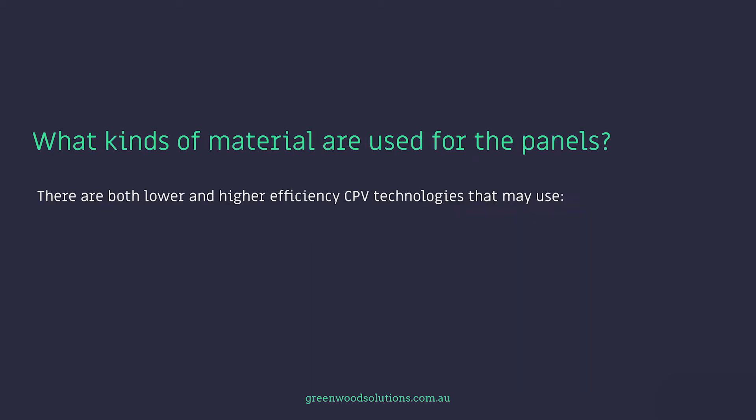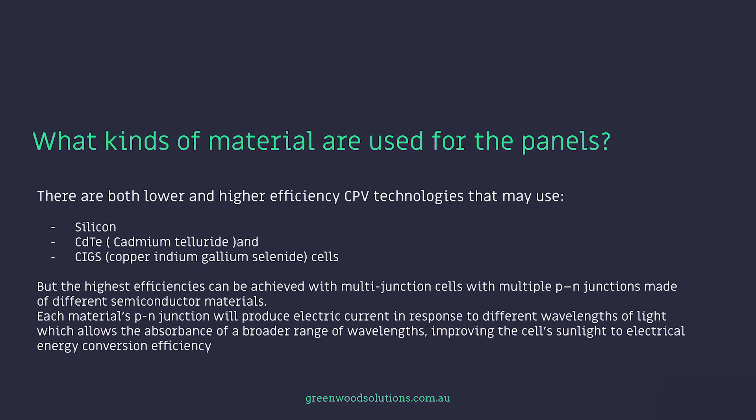There are both lower and higher efficiency CPV technologies that may use silicon, cadmium telluride, and copper indium gallium selenide cells. But the highest efficiencies can be achieved with multi-junction cells with multiple PN junctions made of different semiconducting materials. Each material's PN junction will provide electric current in response to different wavelengths of light, which allows the absorbance of a broader range of wavelengths, improving the cell's sunlight-to-electrical energy conversion efficiency.